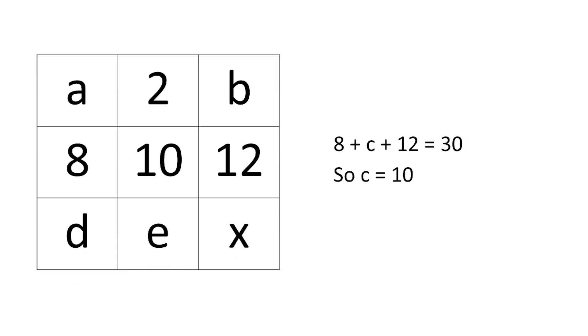We can see that in the horizontal middle row, we get A plus 8 plus C plus 12 equals 30, and from that we can determine that C equals 10.